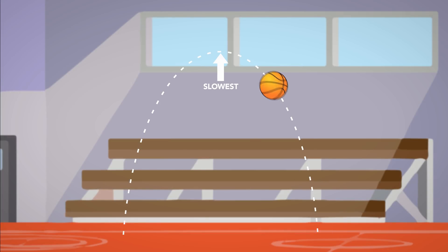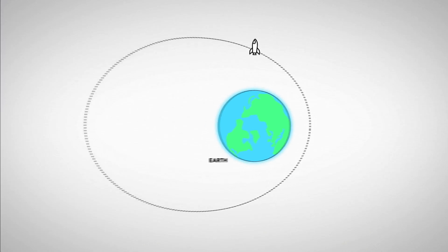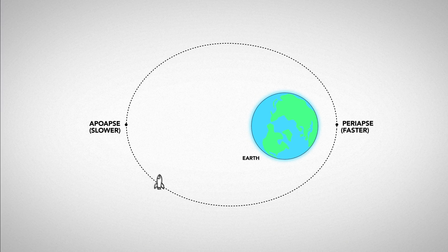Much like when you throw an object up in the air and it travels in an arc with a speed slowest at the top, in space you'll be orbiting a body slower at your highest point and faster at your lowest point.